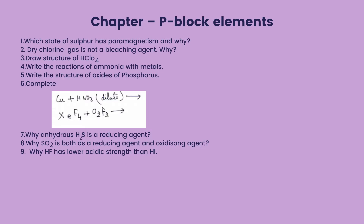Chapter: P-block Elements. Which state of sulfur has diamagnetism, and why? Why is dry chlorine gas not a bleaching agent, and why? Draw the structure of HClO₄. Write the reaction of ammonia with metal. Write the structure of the oxides of phosphorus and complete the reactions given. Why is anhydrous hydrogen sulfide a reducing agent? Why is sulfur dioxide both a reducing agent and an oxidizing agent? Why does HF (hydrogen fluoride) have lower acidic strength than hydrogen iodide?